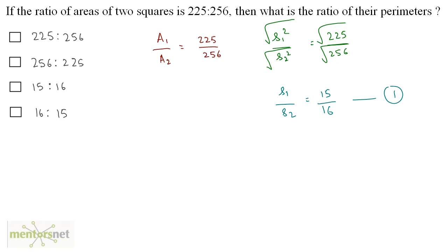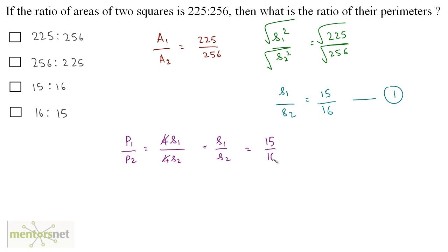Now, we have been asked the ratio of their perimeters: P1/P2. The perimeter of a square is 4 times the side, so P1/P2 = (4s1)/(4s2). The 4s cancel out, giving s1/s2 = 15/16. So the ratio of perimeters is 15 to 16, and option C is the correct answer.